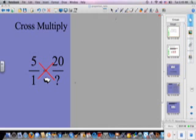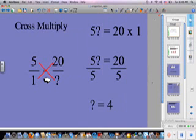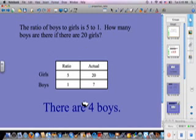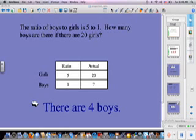Remember, when you have a number right by a variable, it means times. So 5 times question mark equals 20 times 1. So we have to divide both sides by 5, and we're left with question mark equals 4. So we know that there are 4 boys if there are 20 girls. I would like that class very much.